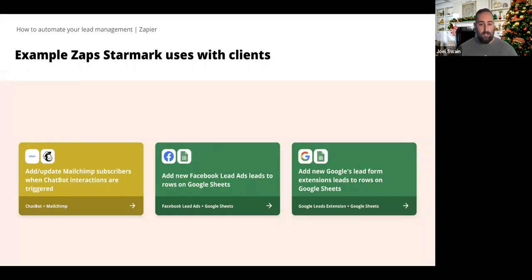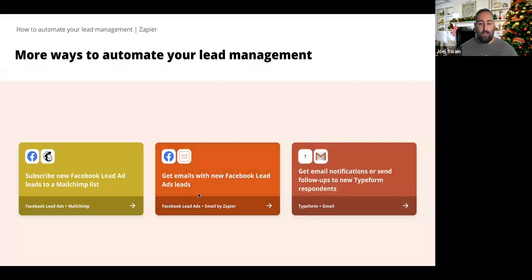If you're unsure, those are specific examples of automating lead management. I wanted to share a few more — keep in mind Zapier has over 2,000 apps, so just because you don't see your apps listed doesn't mean we don't have integrations for them. You can head to zapier.com/apps to see the complete list. We have Facebook lead ads to MailChimp, Facebook lead ads to Email by Zapier — an internal tool useful for sending internal notifications when a new lead comes in — and Typeform to Gmail, so you can send emails when you get new form responses.